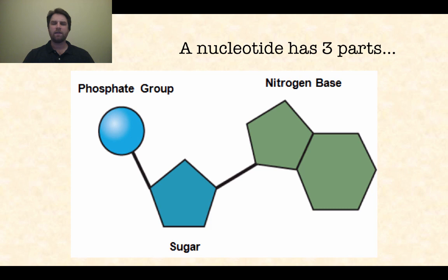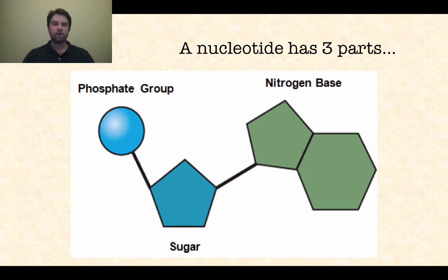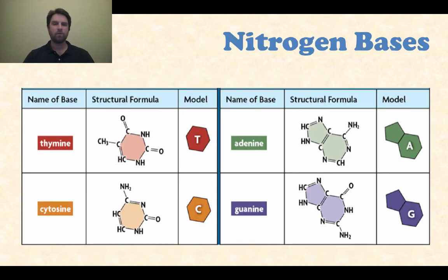A nucleotide, the monomer, has three different parts — and this is really important to understand. You've got a sugar, represented by the blue pentagon at the bottom. To the right of that, you have a nitrogenous base, and to the left, you have a phosphate group. Sugar, a nitrogenous base, and a phosphate group — those three parts are very important to remember.